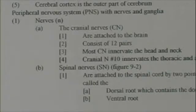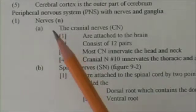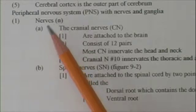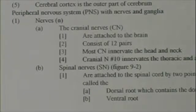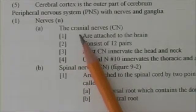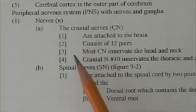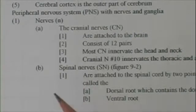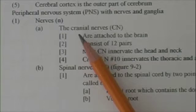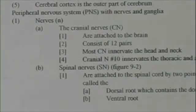The peripheral nervous system includes two parts: nerves and ganglia. I'm not going to tell you what a nerve is — you may think you know, but you probably don't; we'll come to that a little later. The nerves are attached either to the brain, called cranial nerves, or to the spinal cord, called spinal nerves. Those attached to the brain — the cranial nerves — consist of 12 pairs, most of which innervate structures in the head and neck.